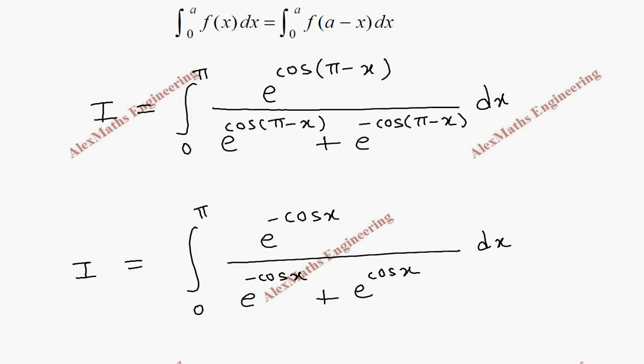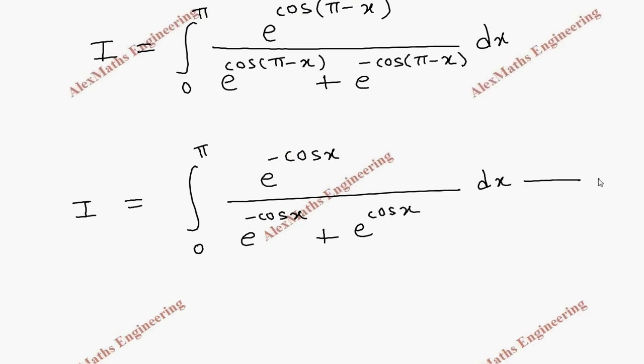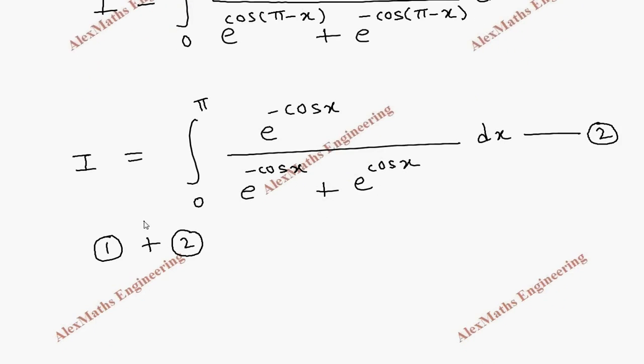Now we are going to add this 1 and this 2. So while adding we have I on both the sides. That is in 1 also we have I and in 2 also we have I. We are adding, it will be 2I.